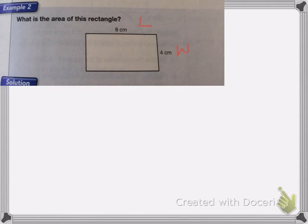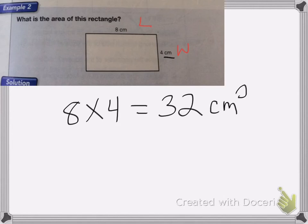So again, we're going to do length times width. So 8 times 4, which is equal to 32. Now for the label of this one, we're going to label it centimeters squared, because area is always measured in square centimeters.